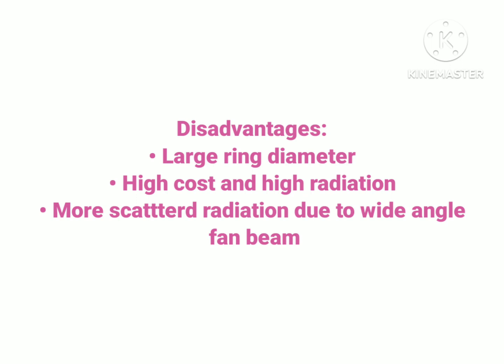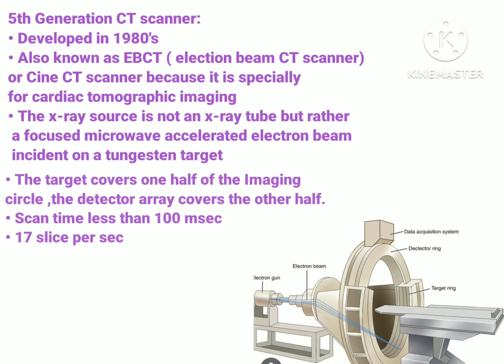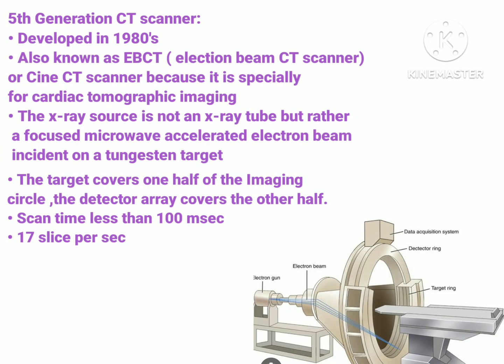Disadvantages of the fourth generation CT scanner: first is large ring diameter — since the X-ray tube rotates inside the detector ring and the detectors don't rotate, a large ring diameter of approximately 170 to 180 cm was needed to maintain acceptable tube-skin distance. Next was high cost and high radiation. Third was more scattered radiation due to the wide-angle fan beam.